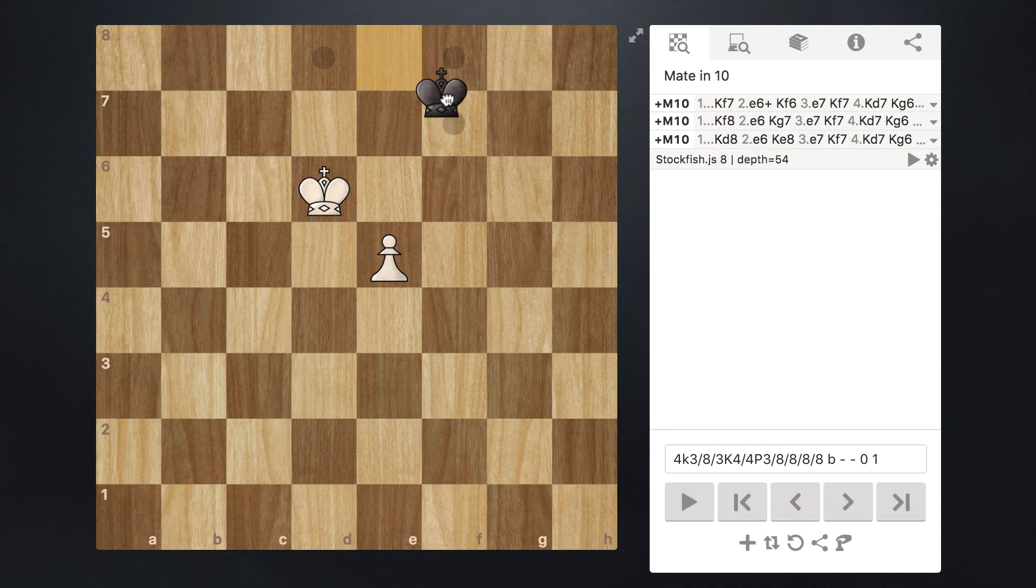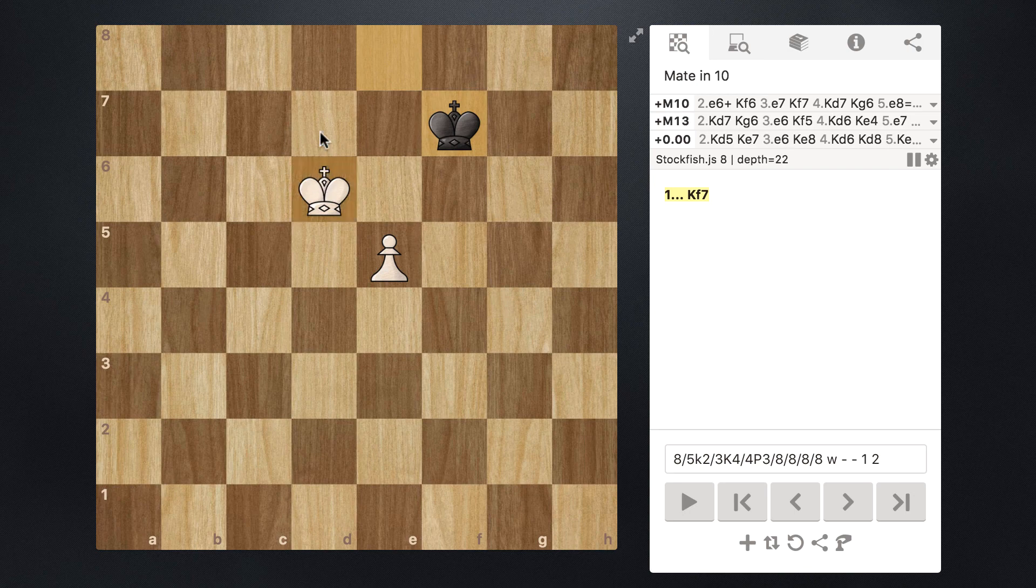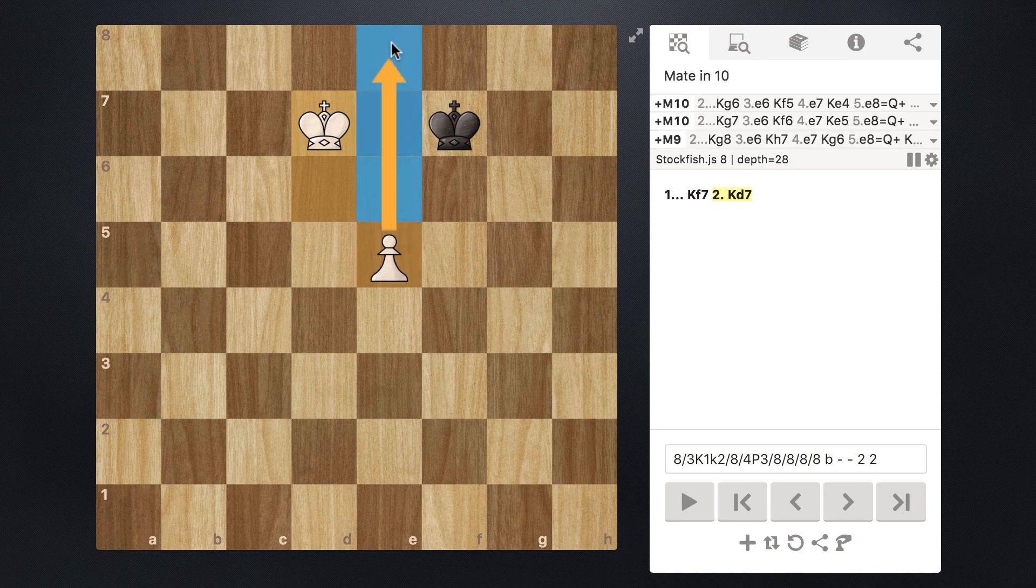And now we see if the enemy king chooses to move down in one, all we have to do is take our king, move it up one, and it controls all these squares and safely allows our pawn to promote.